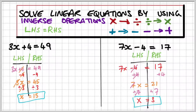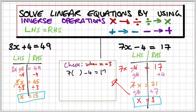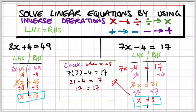We're not finished until we've checked to see if this works. Let's substitute x equals 3 into the equation: 7 times 3 minus 4 gives 17. Well, 7 times 3 is 21, minus 4 is 17. So 21 minus 4 is 17, and that's equal to 17. Therefore, the left-hand side and the right-hand side are balanced.